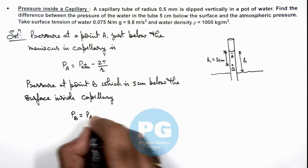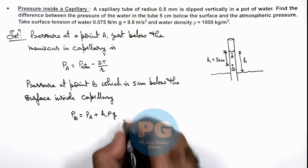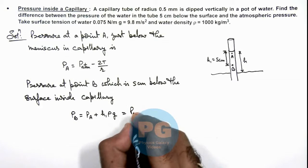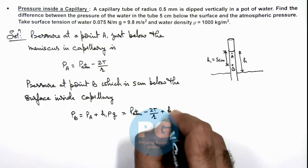Then in this situation we can write pressure at point B will be P_A + h₁ρg. If we substitute the value, this will be P_atm - 2T/r + h₁ρg.